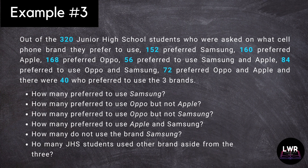For our last example, let us have example number three. Out of the 320 junior high school students who were asked on what cell phone brand they prefer to use, 152 preferred Samsung, 160 preferred Apple, 168 preferred Oppo, 56 preferred to use Samsung and Apple, 84 preferred to use Oppo and Samsung, 72 preferred Oppo and Apple, and there were 40 who preferred to use all three brands.